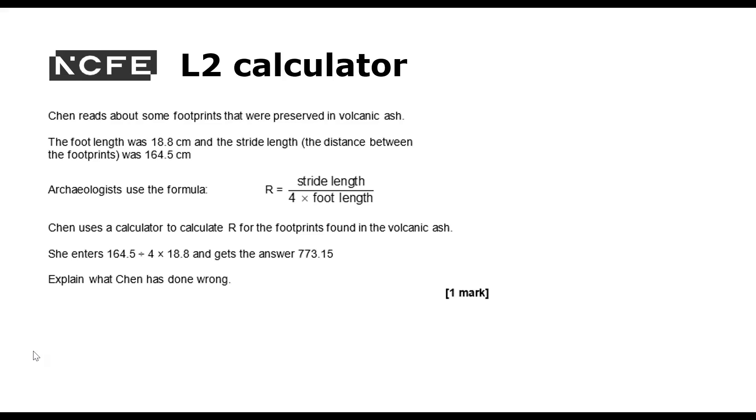We're going to look at a Level 2 calculator question now. Chen reads about some footprints that were preserved in volcanic ash. The foot length was 18.8 centimetres and the stride length was 164.5 centimetres. Archaeologists use this formula. Chen uses a calculator to calculate R for the footprints found in the volcanic ash. She enters stride length divided by 4 times 18.8 and gets this answer. What has Chen done wrong?